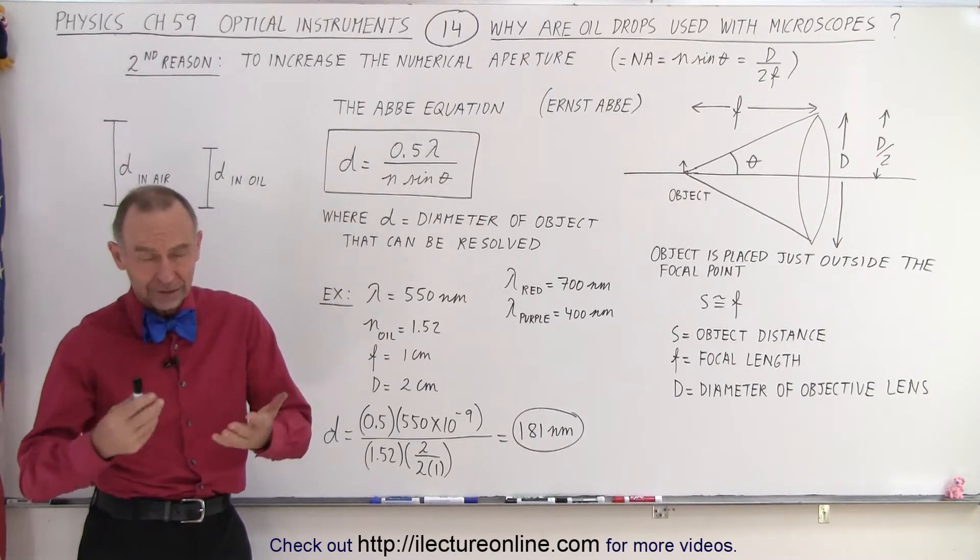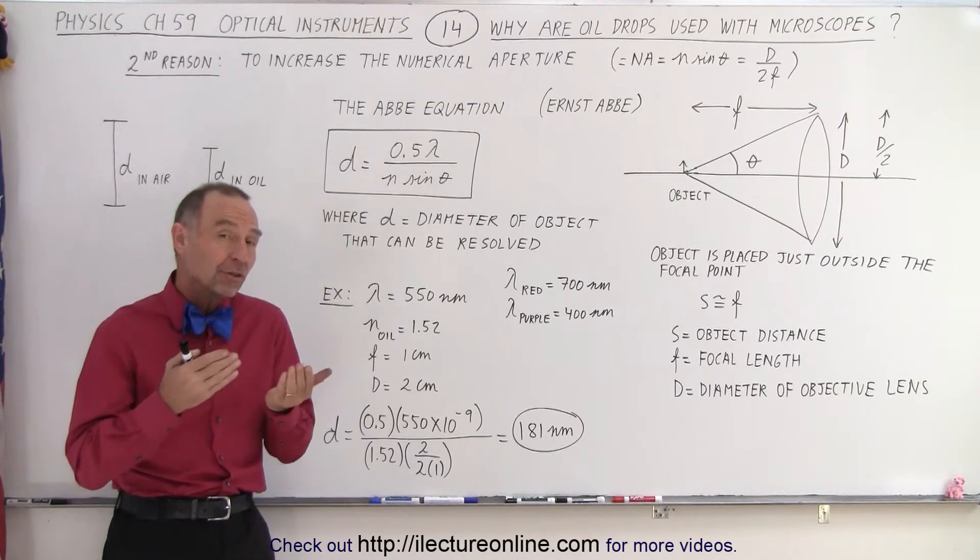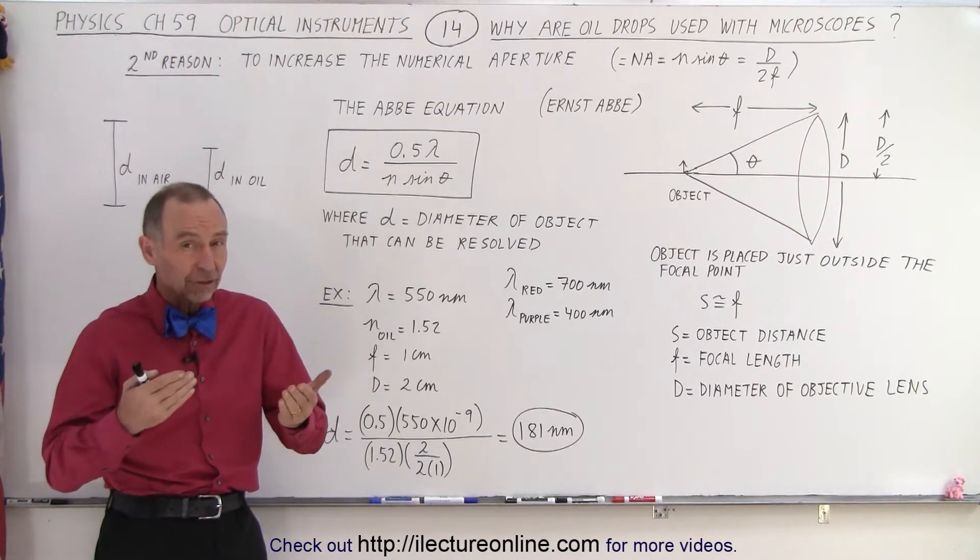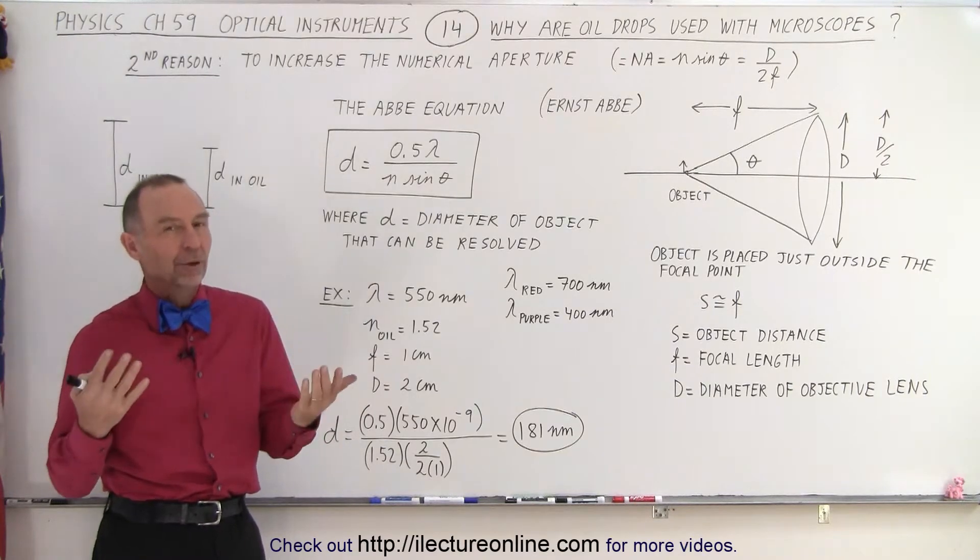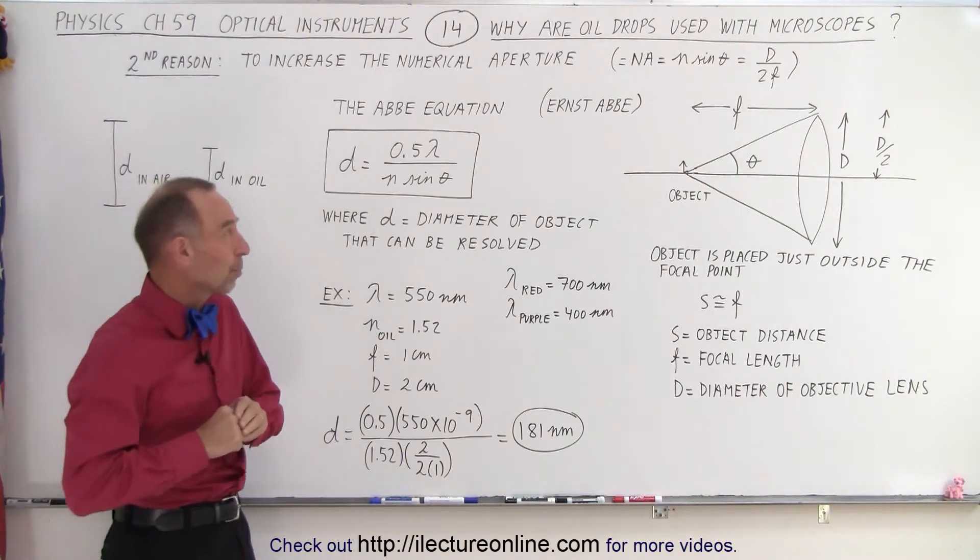The lens, of course, the objective lens. And again by increasing the numerical aperture of the objective lens, we will increase the amount of light going into the microscope and that's what it's all about. Increasing the light going into the microscope.